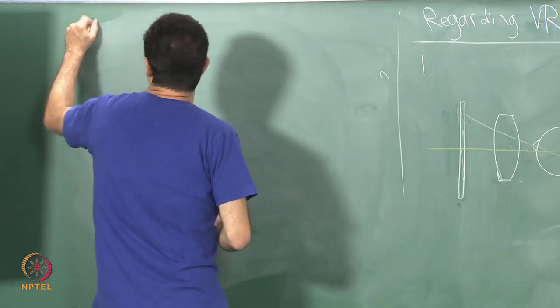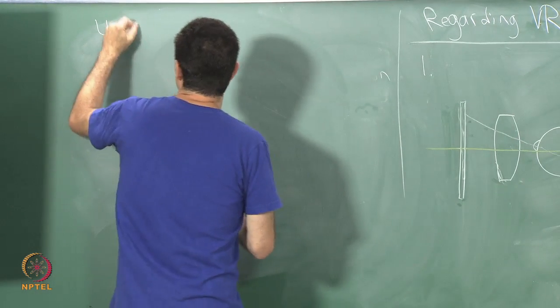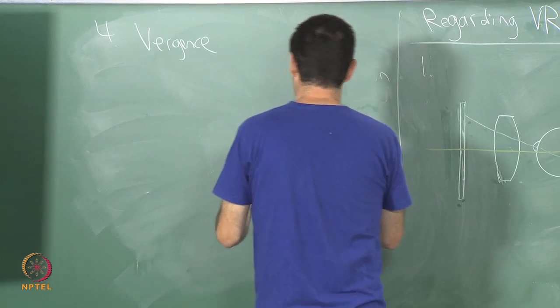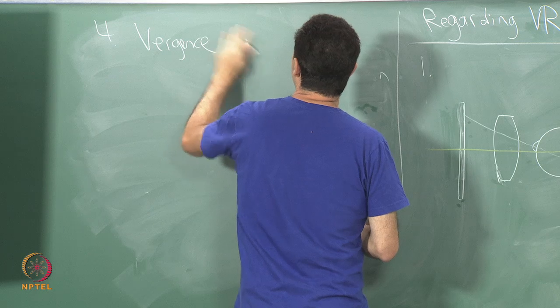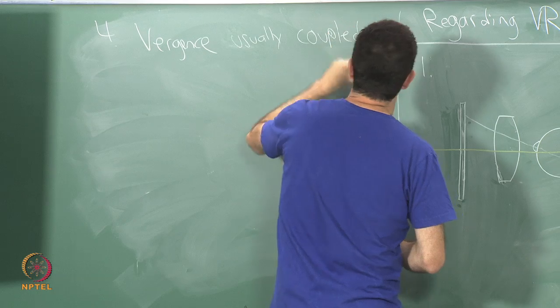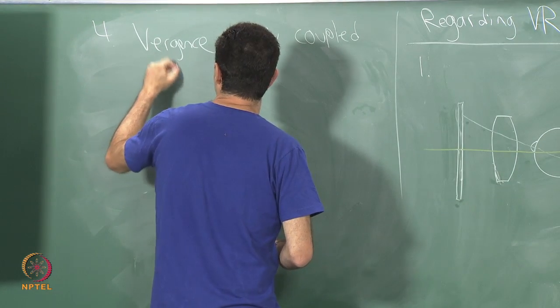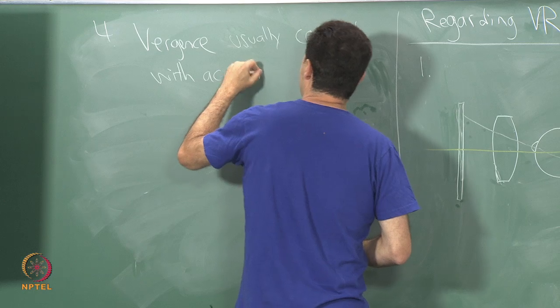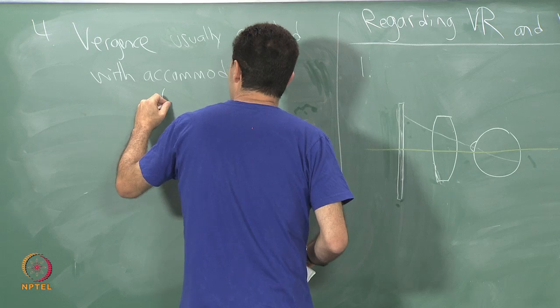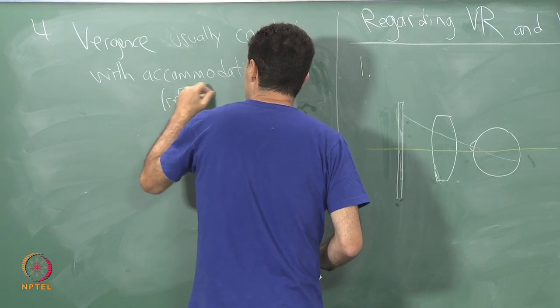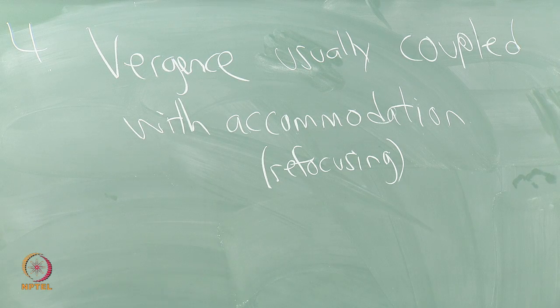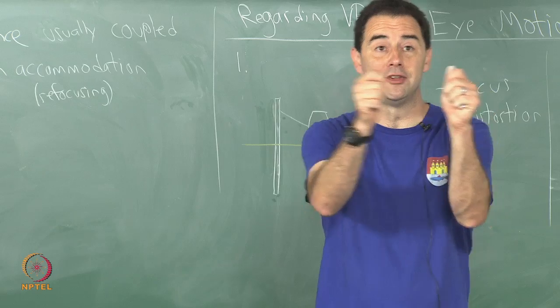This one is really problematic: vergence is usually in the real world coupled with accommodation. Remember that accommodation means refocusing and vergence means convergence or divergence, these motions that you do for stereo correspondences.